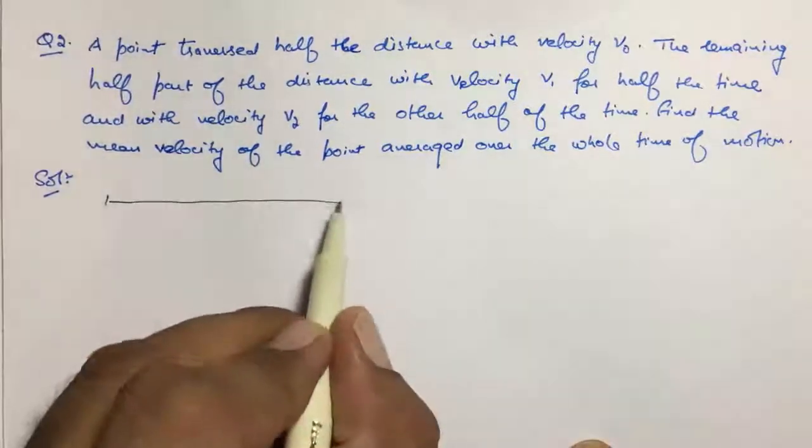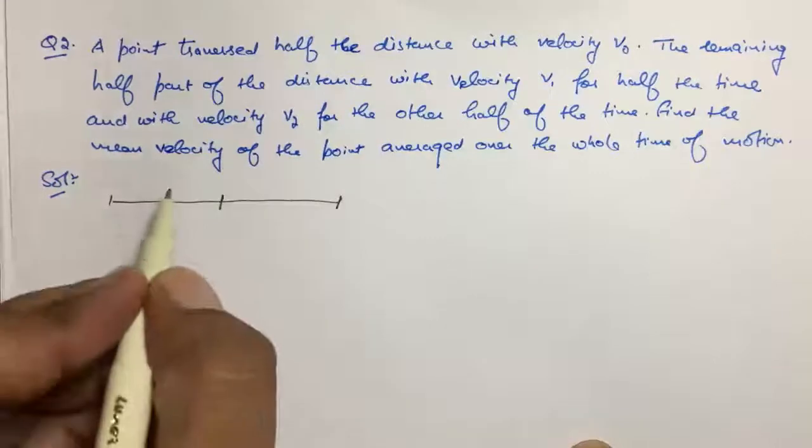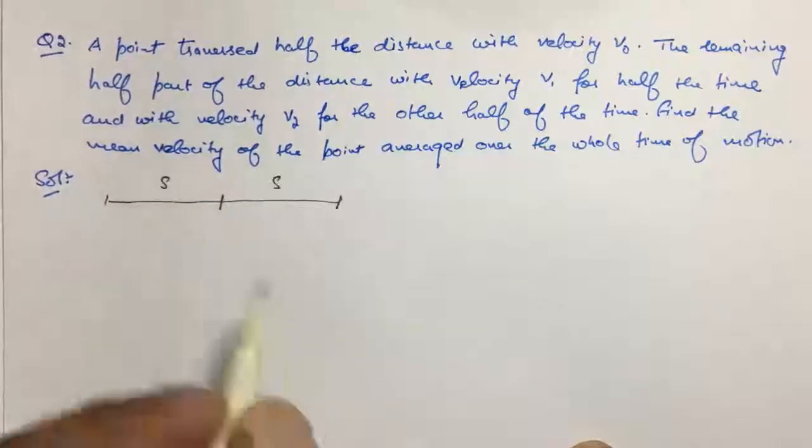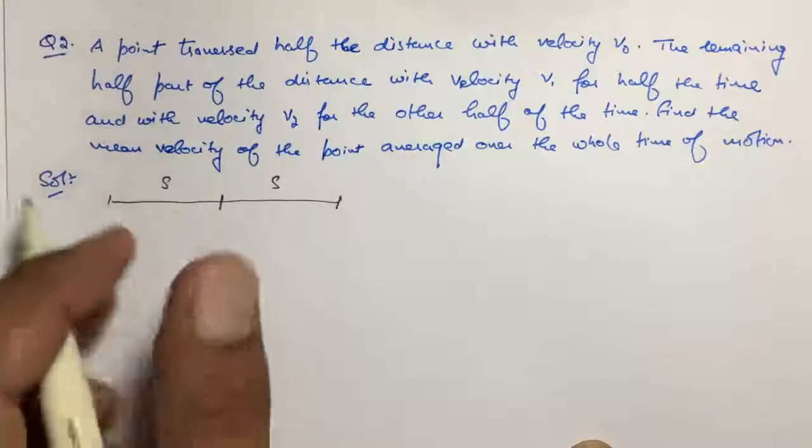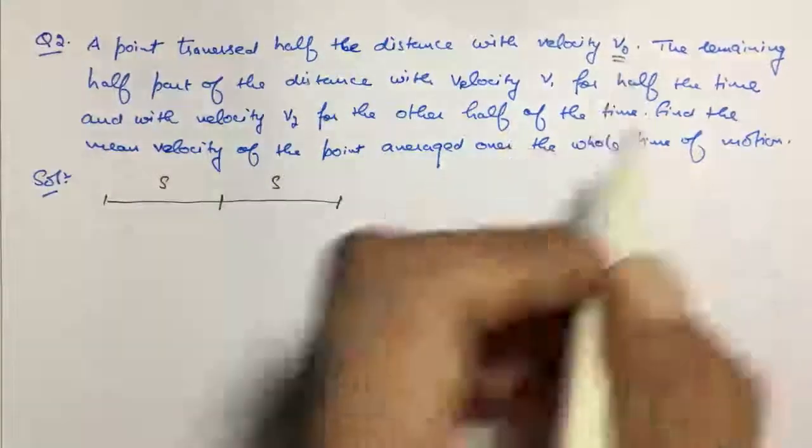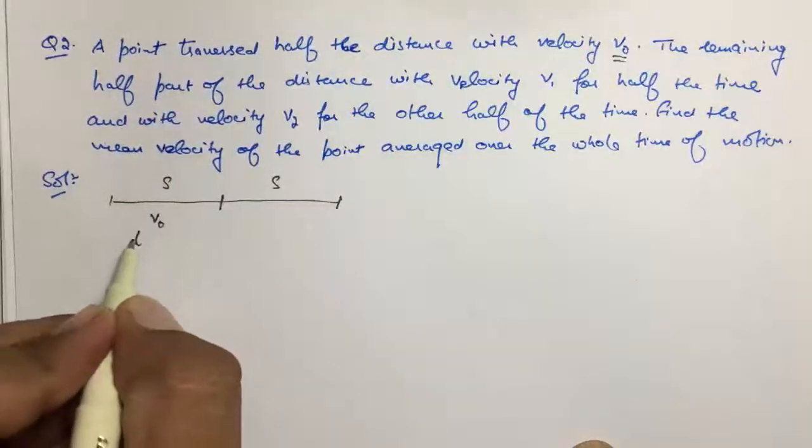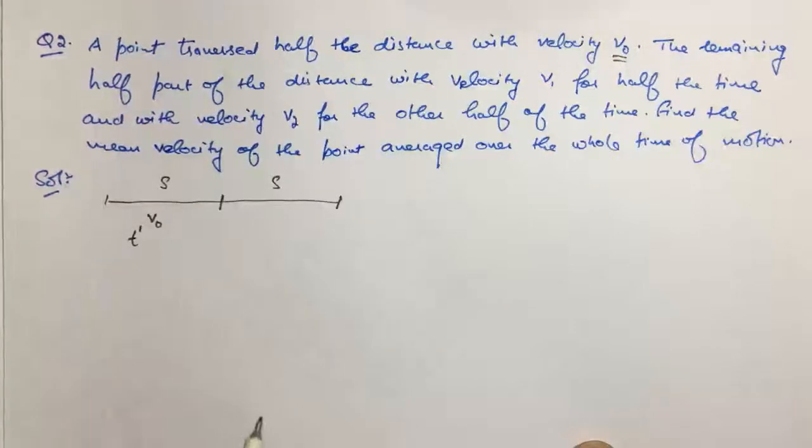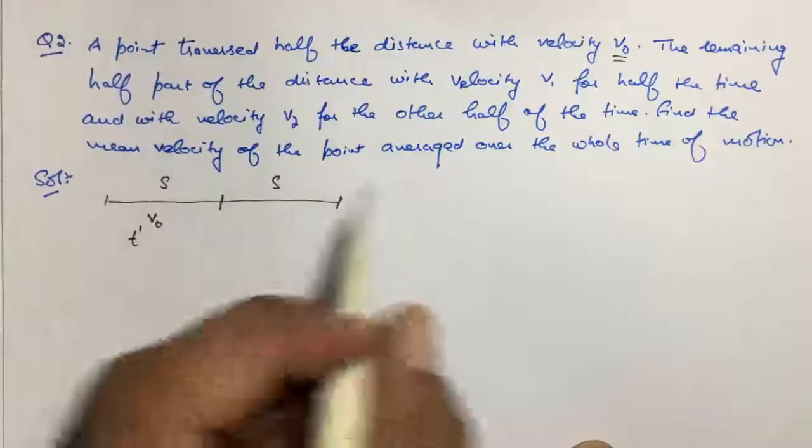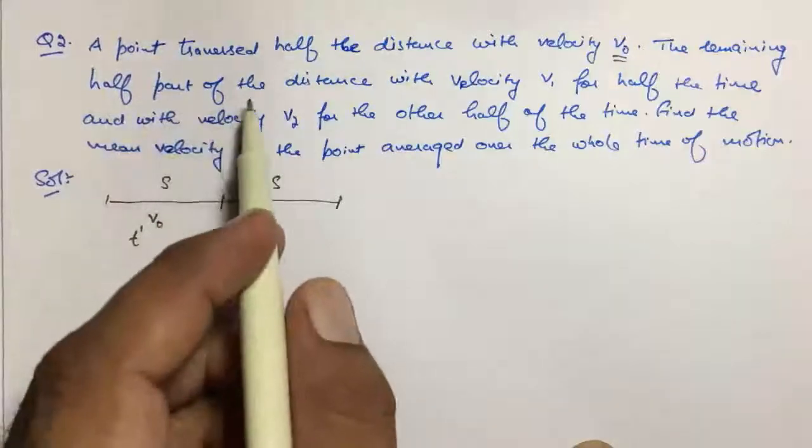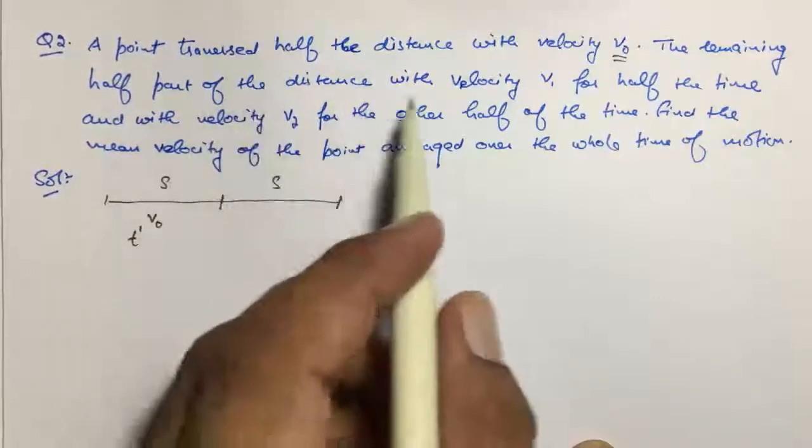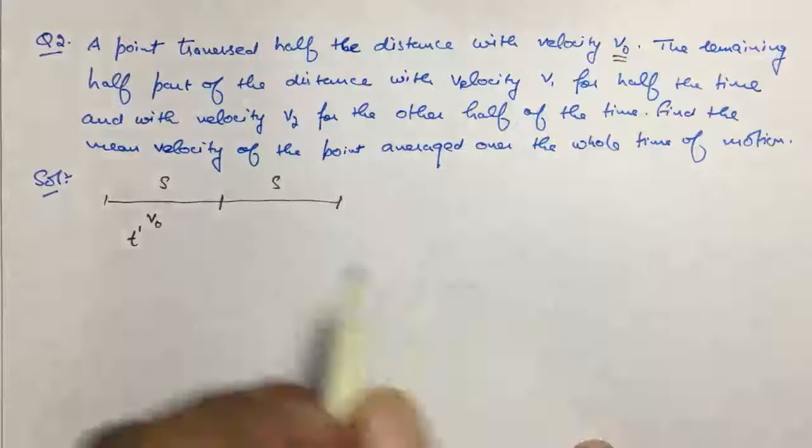Say the total distance traversed is S, and this half distance is traversed with V₀. So velocity is V₀, and time is T′. They say the remaining half part of the distance with velocity V₁ for half the time.